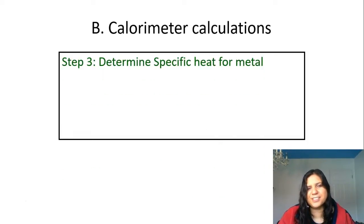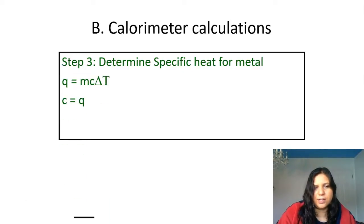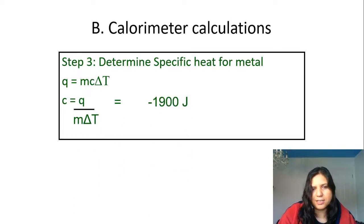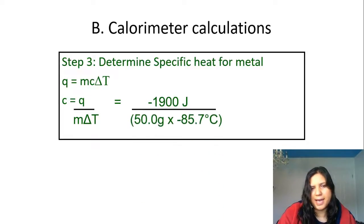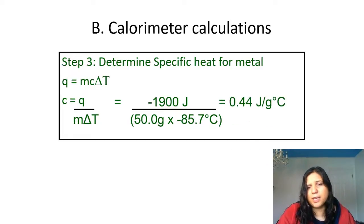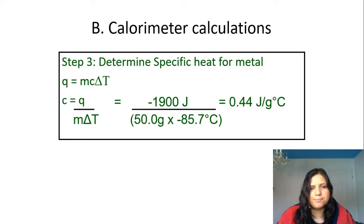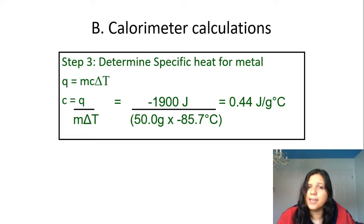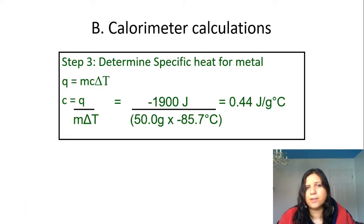Step three: determine the specific heat of the metal. Rearrange Q = MCΔt to solve for C, and plug in negative 1900 joules for Q, 50 grams for the mass of the metal, and the temperature change of the metal. Notice the two negatives cancel, giving a positive value for specific heat — which is correct since specific heat is always positive. The specific heat is 0.44 joules per gram degree Celsius. This is closest to the specific heat of iron, which is 0.45 joules per gram degree Celsius.